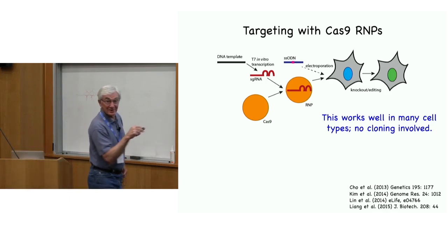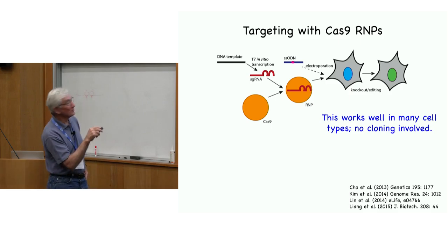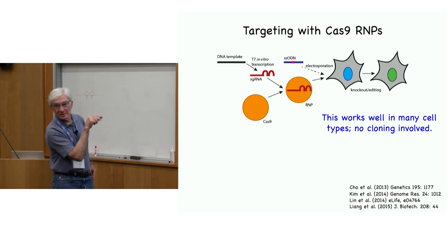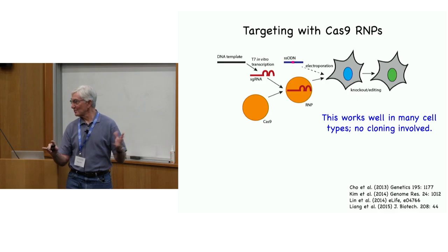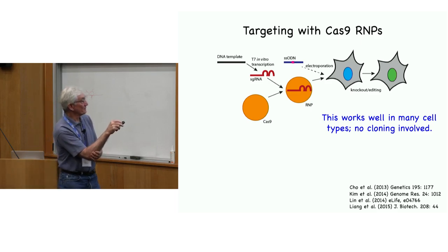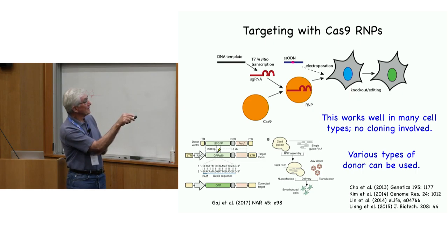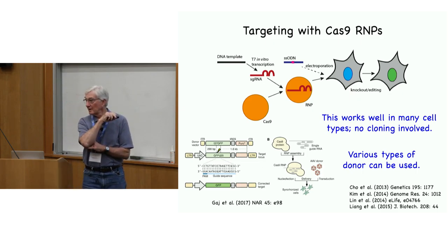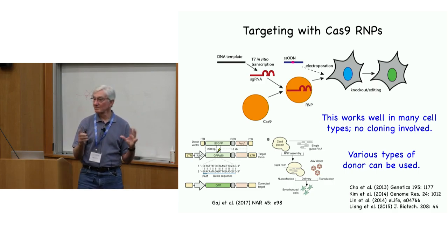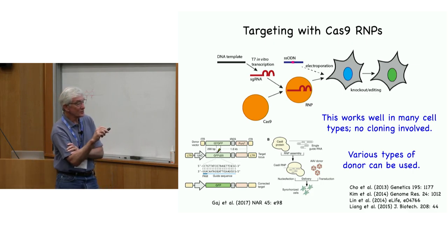We're doing RNP delivery, which works in many different cell types and tends to be quite efficient. One of the nice things is that there's no cloning involved — you never have to make a molecular clone as long as someone will sell you the Cas9. You can also use many different donor templates. We're using a single-stranded oligo, and there's a paper where they actually used an AAV donor in conjunction with RNP delivery, mixing and matching molecules.